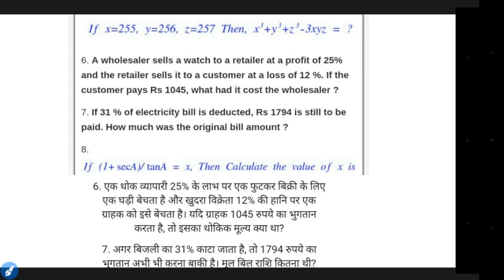So the wholesaler sells at a profit of 25% and the retailer sells at a loss of 12%. If the customer pays 1,045 rupees, what was the wholesale cost? We will explain it to you in Hindi and English. If you have questions, pause the screen, try to solve it yourself, then play it again and see what we are saying.